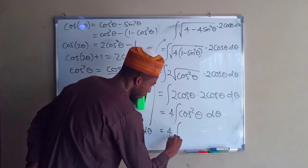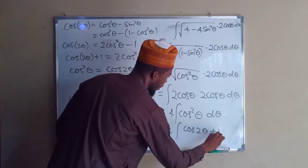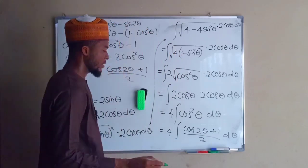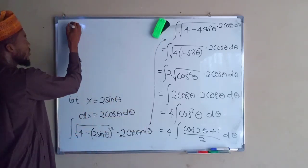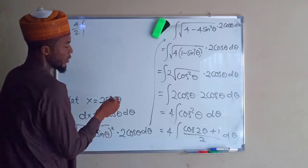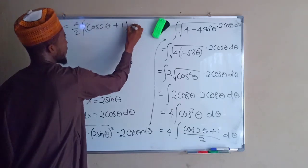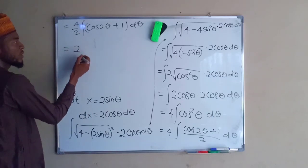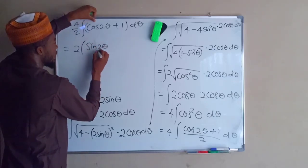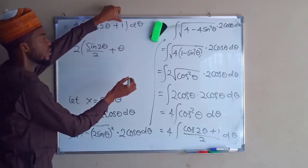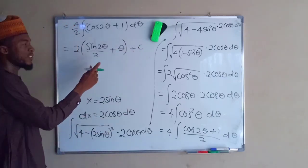This gives us 4 times the integral of (cos 2theta + 1) divided by 2, d theta. Factorizing 1/2 outside, we obtain 4 over 2, which is 2, times the integral of (cos 2theta + 1) d theta. Integrating independently, the first term gives sin 2theta divided by 2, and integrating 1 with respect to theta gives theta, plus c, the constant of integration.